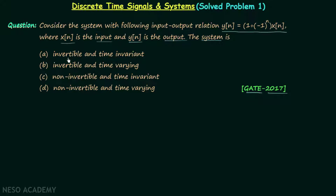Option A is invertible and time invariant. Option B is invertible and time varying. Option C is non-invertible and time invariant. Option D is non-invertible and time varying. It is clear that we need to comment about the nature of the system using the system relationship.